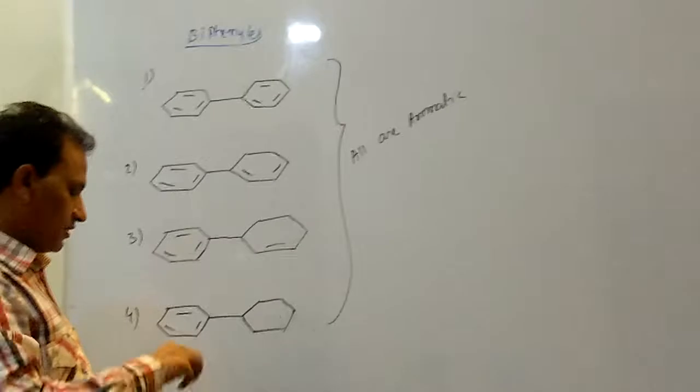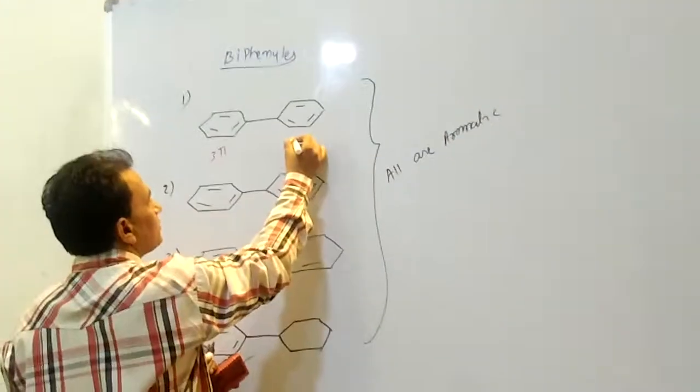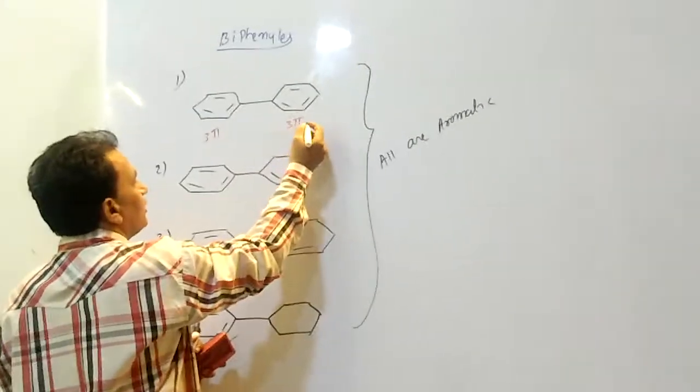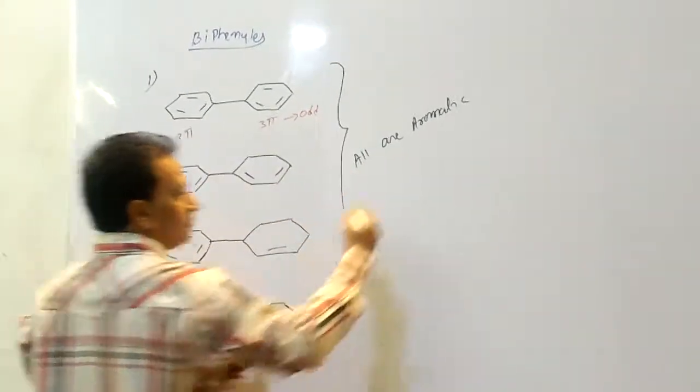How many electrons? How many pi bonds are present? Here 3 pi bonds, here also 3 pi bonds. So 3 pi bonds, 3 pi bonds means odd number means aromatic. What means? Aromatic.